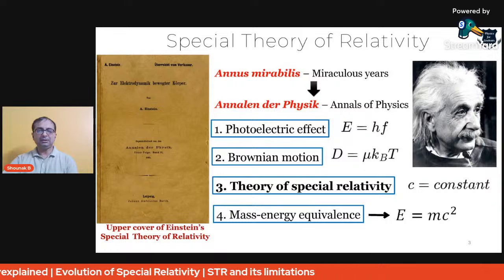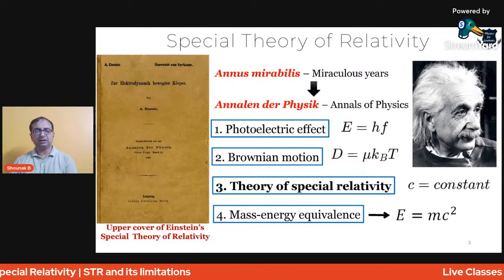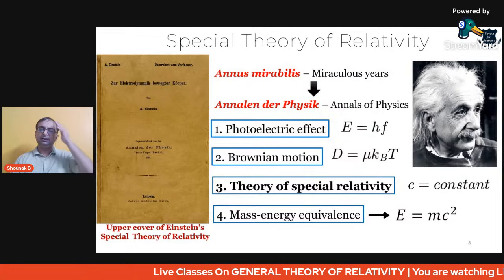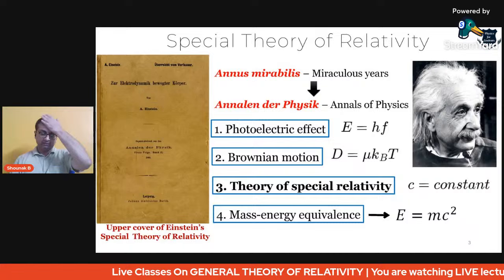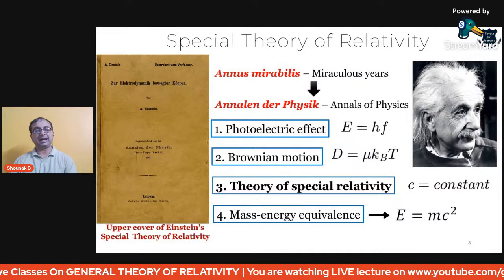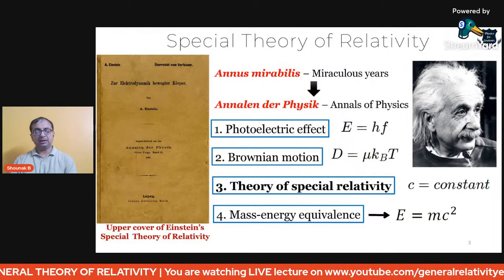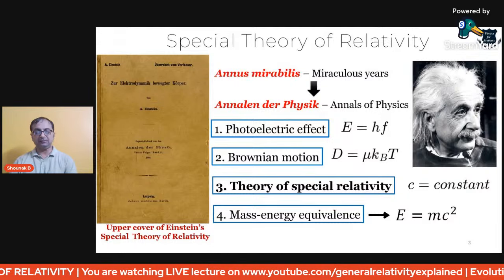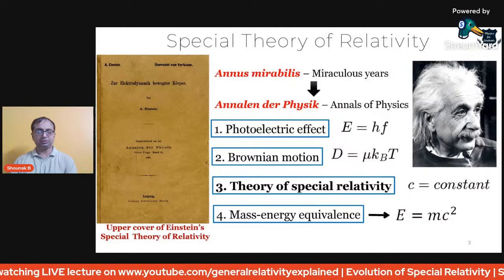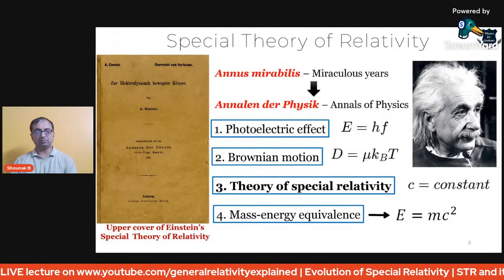The term Annus Mirabilis is taken from the Latin, meaning 'miracle year' — referring to the four papers that Albert Einstein published in Annalen der Physik, a German scientific journal meaning 'annals of physics.' These were published in 1905 and were major contributions to the foundation of modern physics.